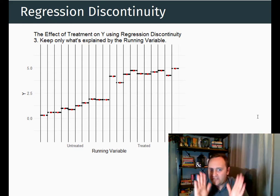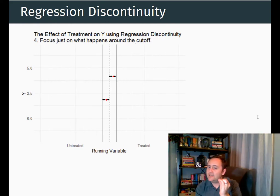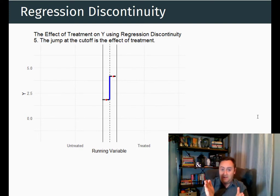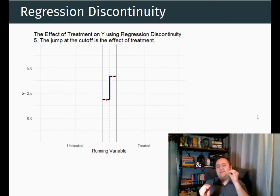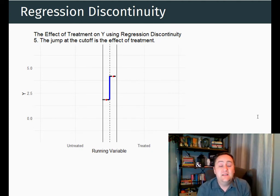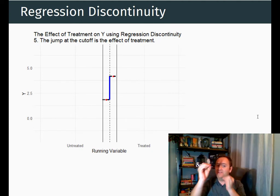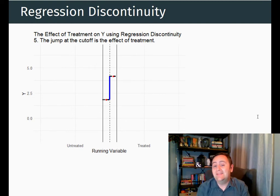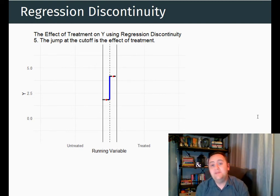But then we're going to get rid of most of the variation — we're only going to focus in on the difference right below the cutoff to right above the cutoff. And the jump that we see right at the cutoff, that's going to be the effect that we're going to say is there. Because comparing people just below and just above, it's basically random assignment. The only real difference between them is that the treatment was assigned to one of them and not the other.